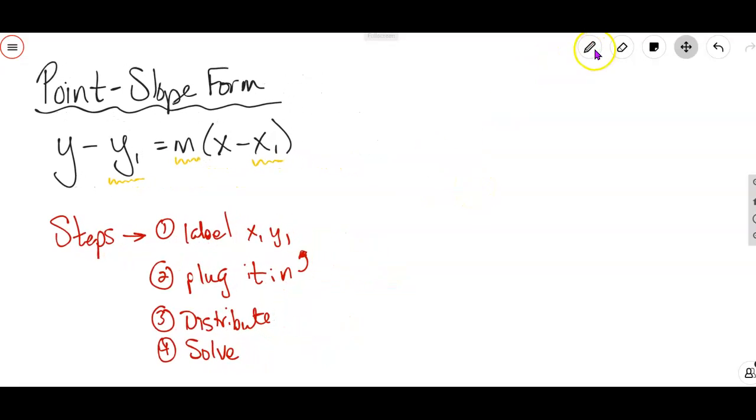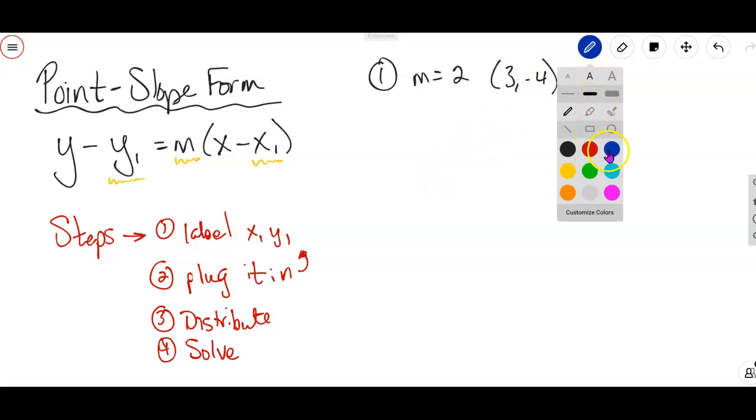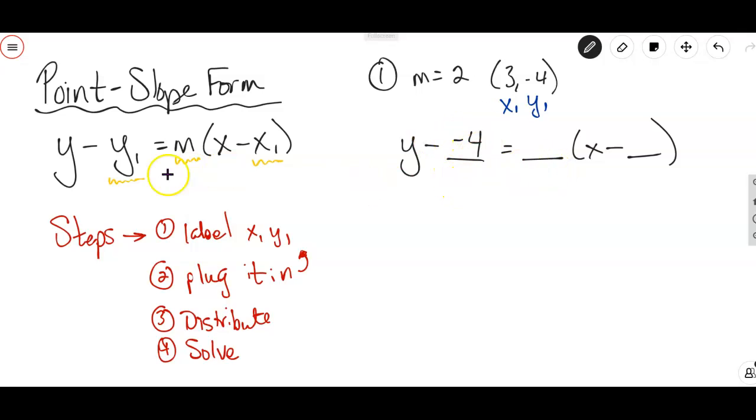All right, so we're going to do a couple problems. We're going to start with basic ones. Okay, so I have a slope of 2 and it passes through the point (3, -4). So again, first thing I want you to do is label x₁, y₁, and now we're going to plug into this form. So it's going to be y minus something equals something times (x minus something). Those are the three blanks, those are the three yellow underlines. And so the first blank is supposed to be y₁, so this is -4. The second blank is supposed to be m, so it's 2. And the third blank is supposed to be x₁, so it's 3.